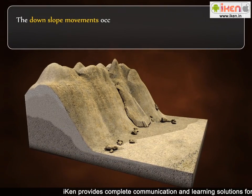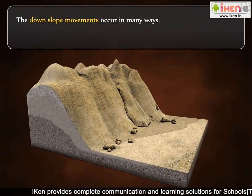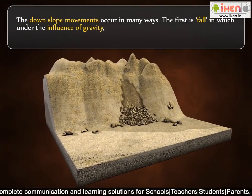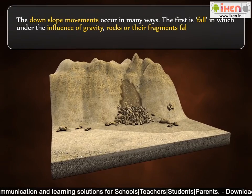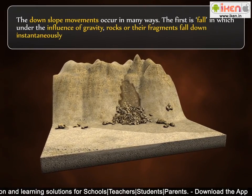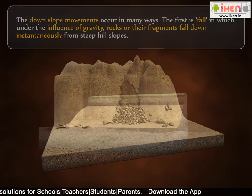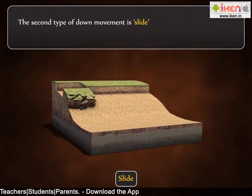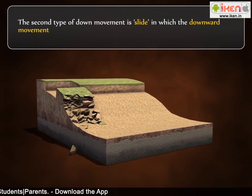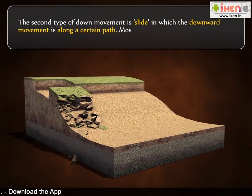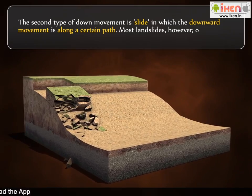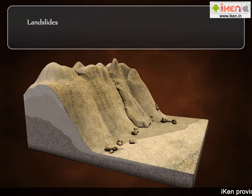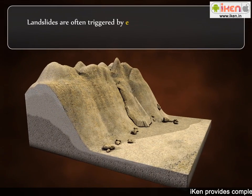The downslope movements occur in many ways. The first is fall, in which under the influence of gravity, rocks or their fragments fall down instantaneously from steep hill slopes. The second type of downslope movement is slide, in which the downward movement is along a certain path. Most landslides, however, occur rapidly. Landslides are often triggered by earthquakes, heavy rainfall, or by wind action.